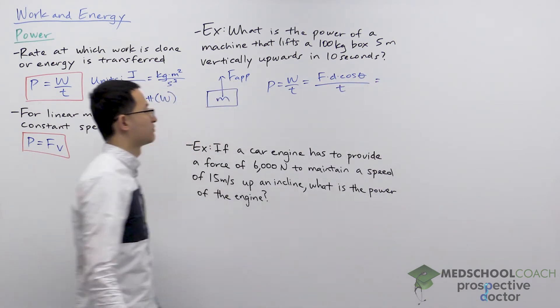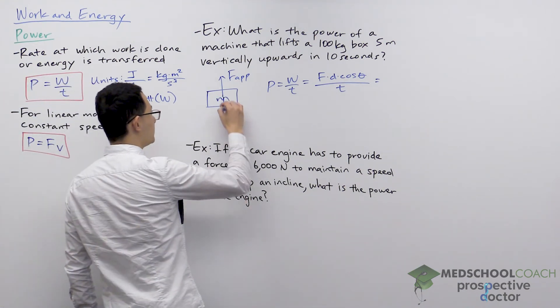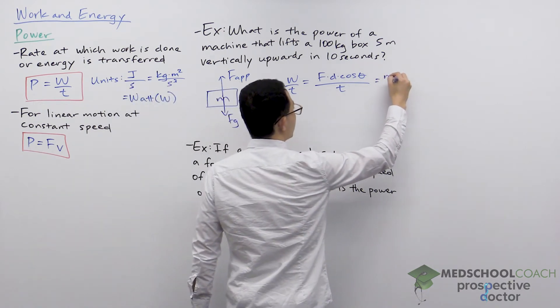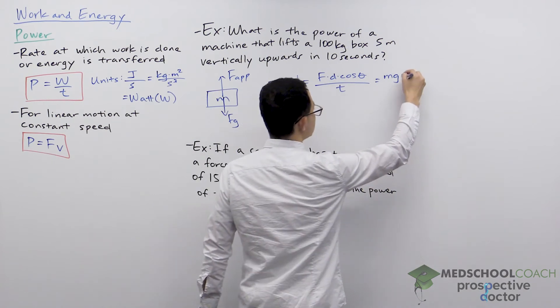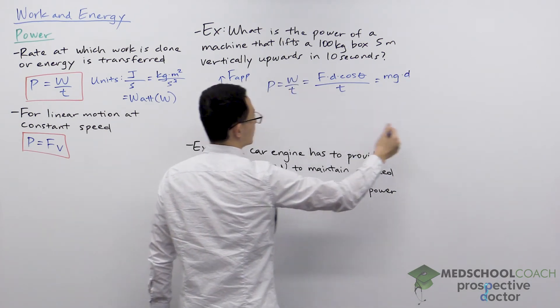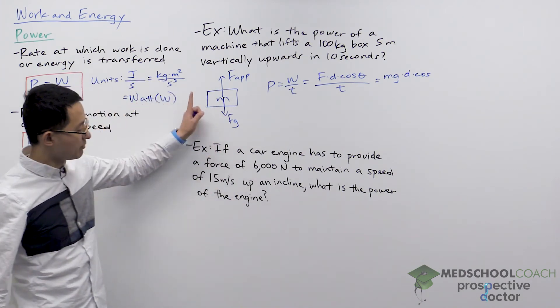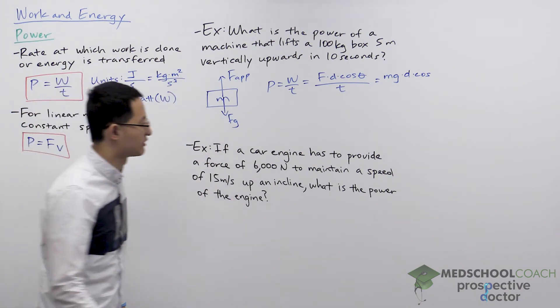So the force here is the force applied, and this force that the machine has to apply has to be equal to the weight of the box, mg. And the displacement, it's lifting it up five meters, but let's keep it as d for now before we plug in the numbers. And the angle here, the applied force is up, the displacement is also up, and they're in the same direction.